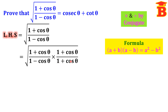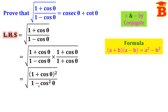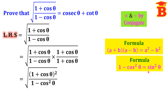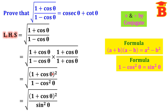The denominator has (1 plus cos theta), that is (a plus b), and (1 minus cos theta), that is (a minus b). So we apply the formula: a squared minus b squared gives us 1 squared minus cos squared theta. The numerator is (1 plus cos theta) whole squared. For the denominator, we use the trigonometry formula: 1 minus cos squared theta equals sin squared theta.